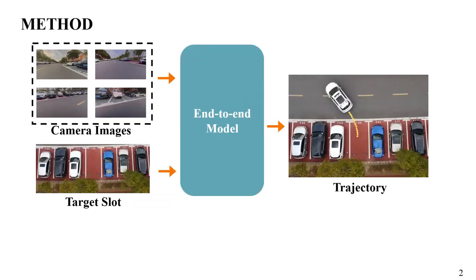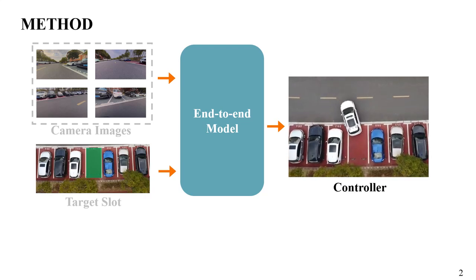We propose an end-to-end parking method. The first input to the model is surround view images provided by the vehicle's cameras. The second input is the target parking slot, which needs to be manually specified. The end-to-end model uses the two inputs to predict subsequent trajectory points and then proceed with controller.